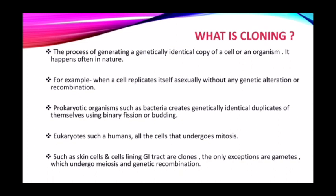In prokaryotic organisms such as bacteria, it creates genetically identical duplicates of themselves using binary fission or budding. This means when a bacterium replicates or produces its clone, it can produce millions of copies within minutes or hours using binary fission or budding.